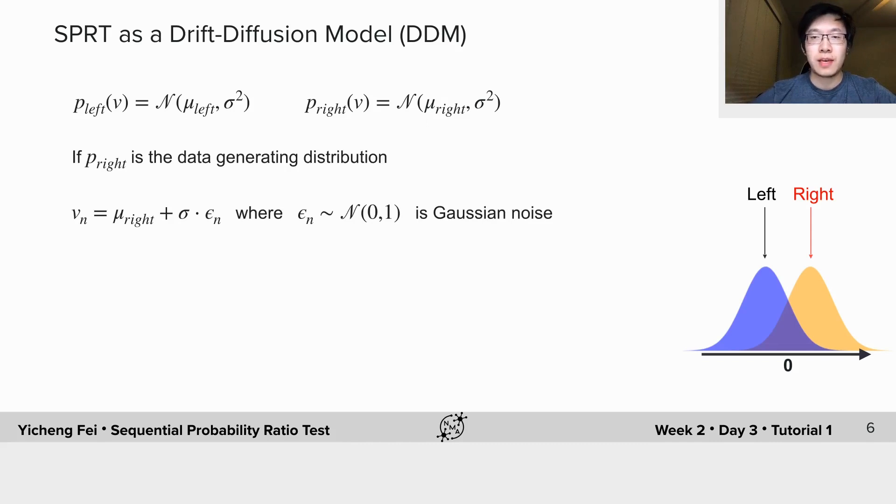Then, each sample, Vn, which is the velocity of the moving dot, can be decomposed into a bias term and a scaled Gaussian noise variable with zero mean. If we plug this transformation into the formula of log likelihood ratio, the new evidence from this particular sample could be expressed with a deterministic term and a zero-centered stochastic term.